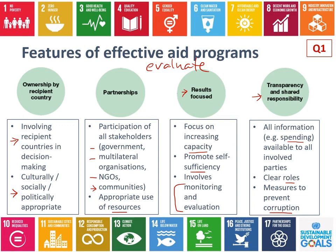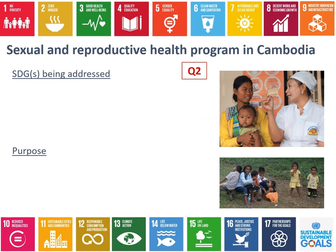Have a go at question one, which is just naming these four features and describing what they are. We're going to spend the majority of this lesson looking at a particular program - a sexual and reproductive health program in Cambodia - and go through all the things you need to know about it.